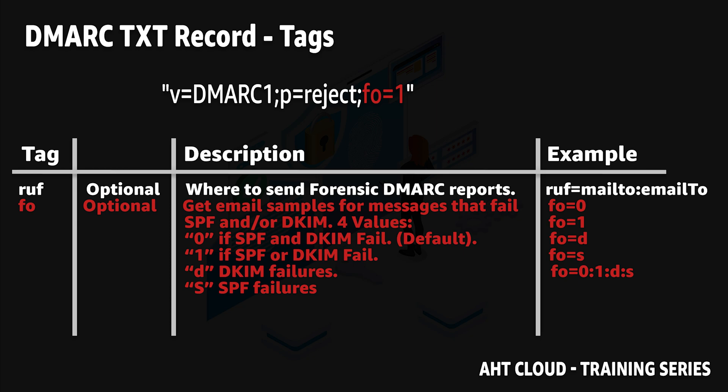The fo tag is also an optional tag. It allows you to tell email service providers that you want email samples if the email failed. You have four options: the zero value generates a report if all authentication mechanisms fail — meaning both your SPF and DKIM policy fail. You can also set it to one, which generates reports if any of your authentication mechanisms fail — either SPF or DKIM. So zero is only if both fail; one is if either fails.